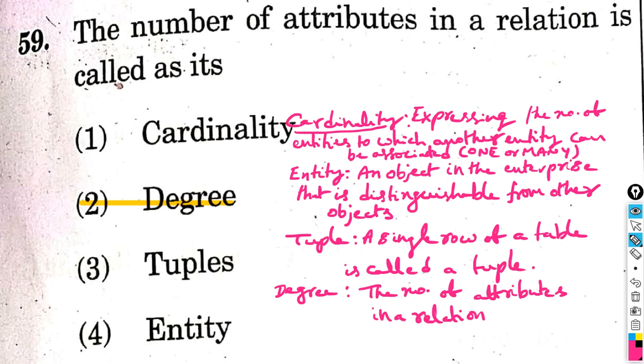A single row of a table is called a tuple. 10 rows means 10 tuples. Thousand rows means 1000 tuples.